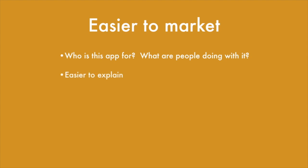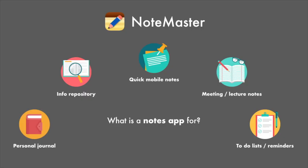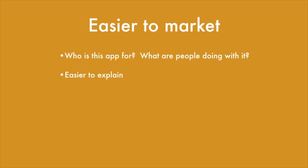Related to this, it's easier to explain what the app is when you have a strong vision. Even for the same app, if I were to try to market it to people that wanted a personal journal versus people that wanted meeting or lecture notes, I would probably use very different messaging and different language. So knowing what your vision is for the app helps you figure out the best way to explain what the app does and why you should want to use it.